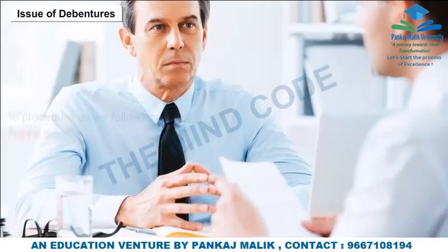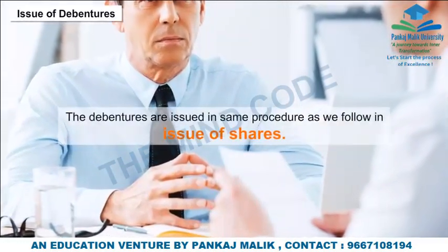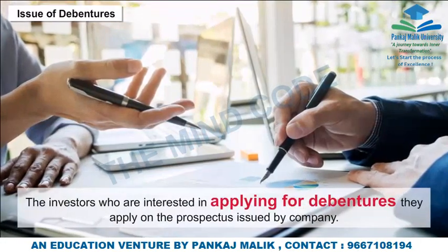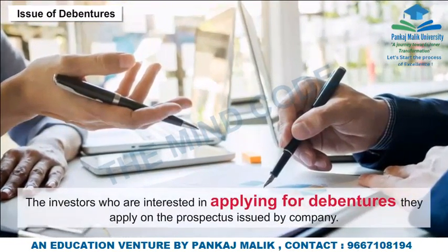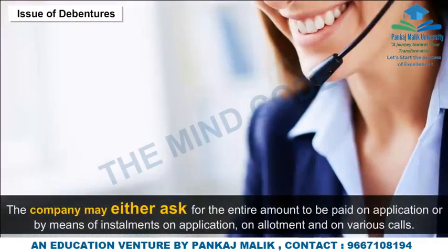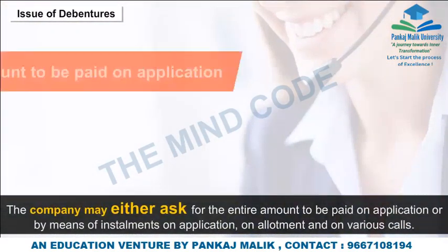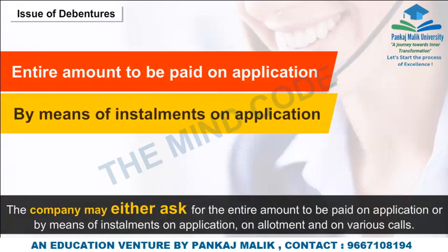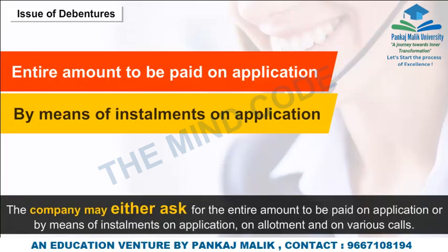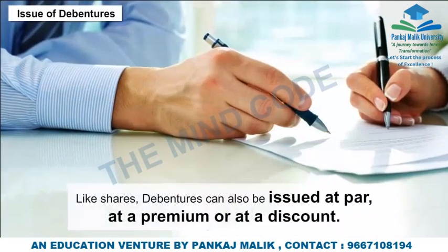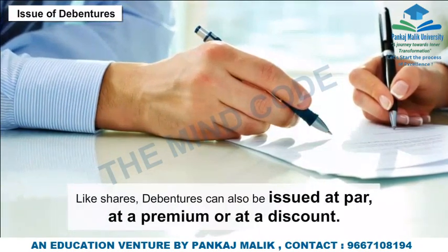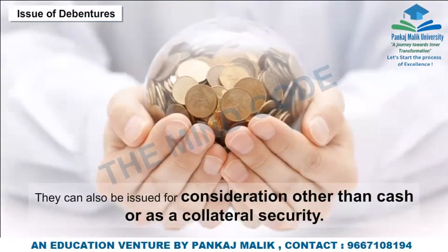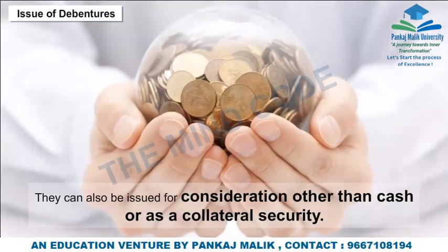Issue of Debentures: Debentures are issued following the same procedure as shares. Investors apply on the prospectus issued by the company. The company may ask for the entire amount on application or by installments on application, allotment, and various calls. Like shares, debentures can be issued at par, at a premium, or at a discount. They can also be issued for consideration other than cash or as collateral security.